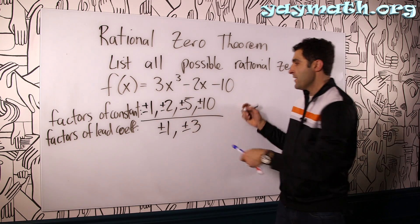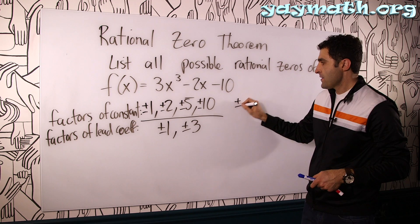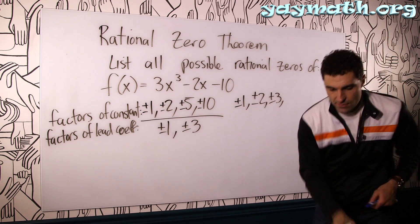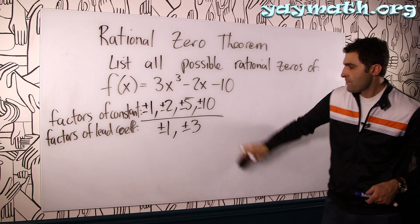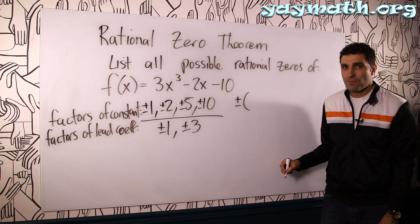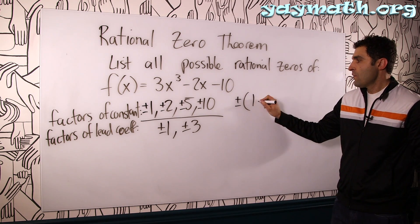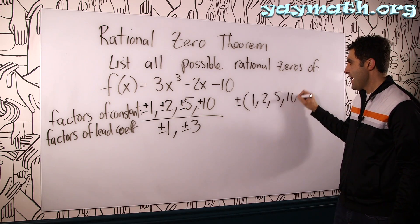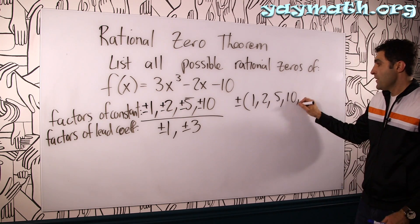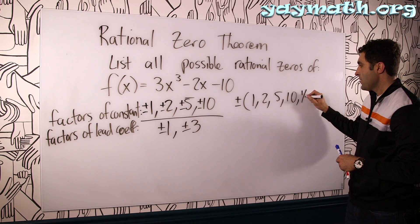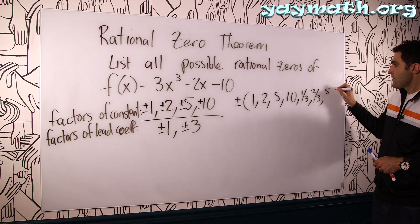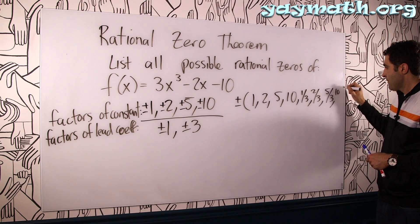So we'll get all these divided by one: plus or minus one, plus or minus two, plus or minus five, plus or minus ten. Some people like to write it as plus or minus one, two, five, and ten to make it simple and neat. And now all of these divided by three would be one-third, two-thirds, five-thirds, and ten-thirds.